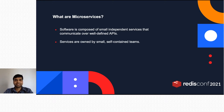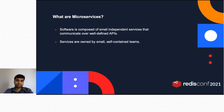What are microservices? Microservices are an architectural and organizational approach to software development, where software is composed of small independent services that communicate over well-defined APIs. These services are owned by small self-contained teams. Microservices architecture makes applications easier to scale and faster to develop, enabling innovation and accelerating time to market for new features.